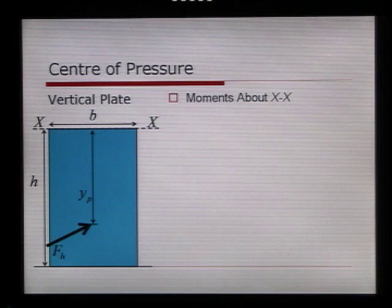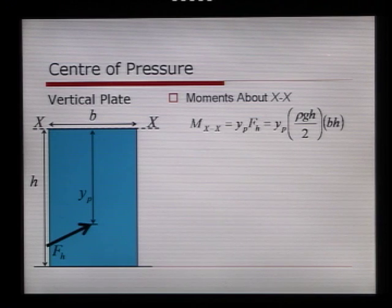We're going to look at the resultant hydrostatic force and yp. The moments about that point are equal to yp times f subscript h, the hydrostatic force. By substituting what we learned from podcast number 6, this is therefore equal to yp times rho g h over 2 times b times h.